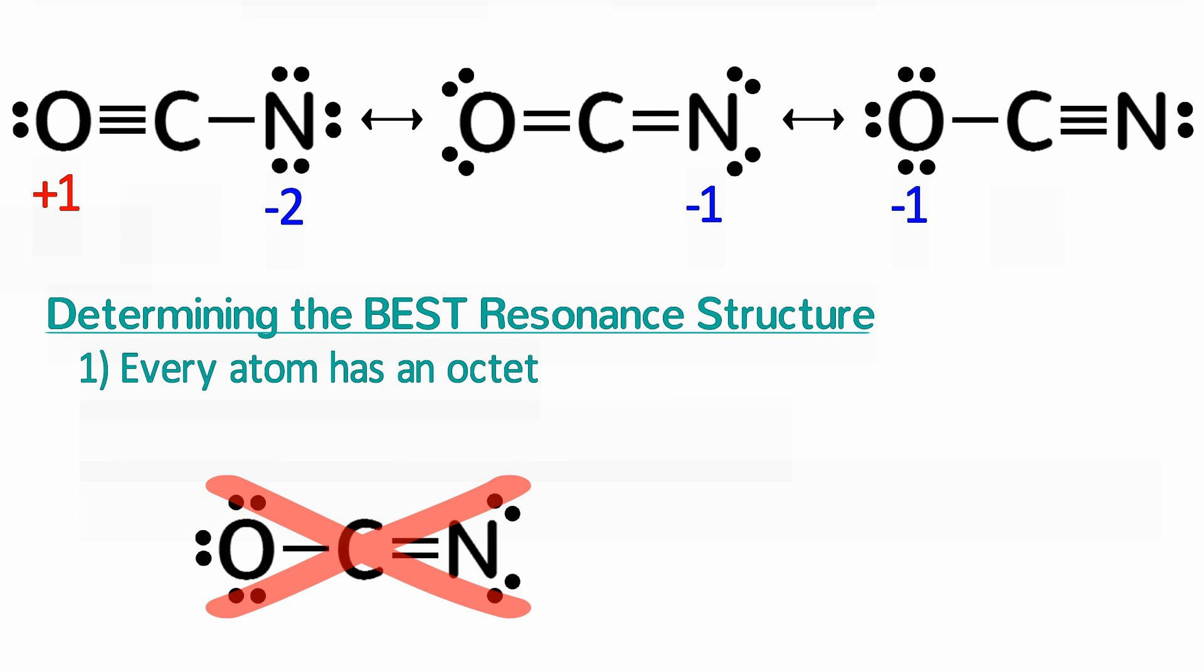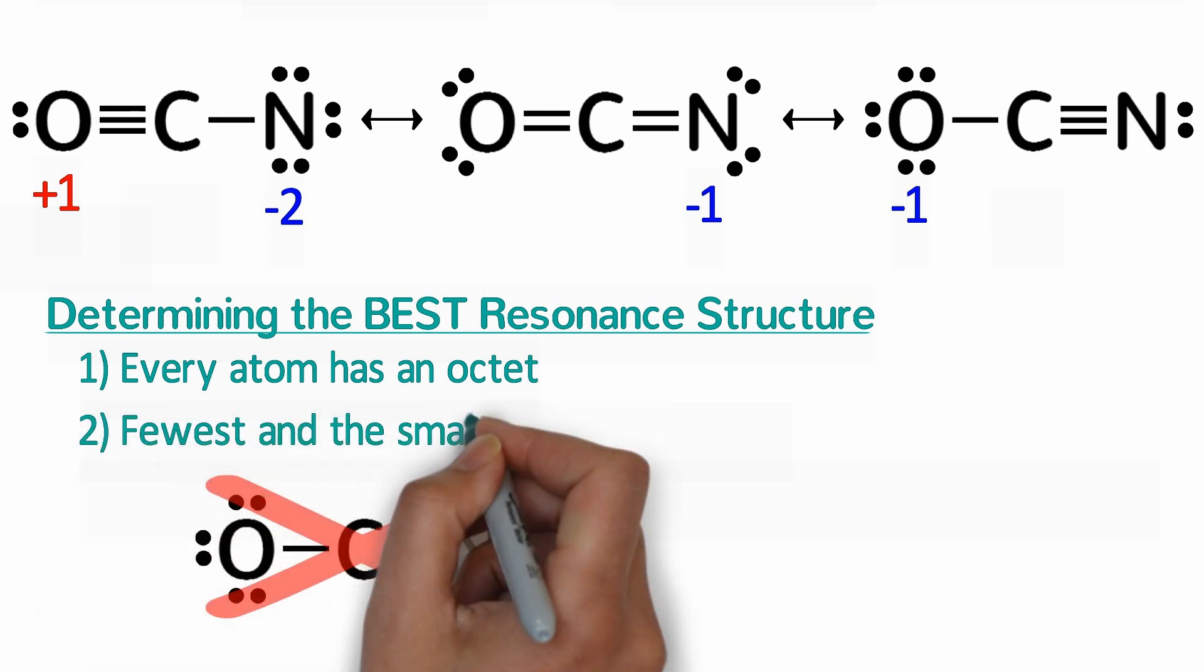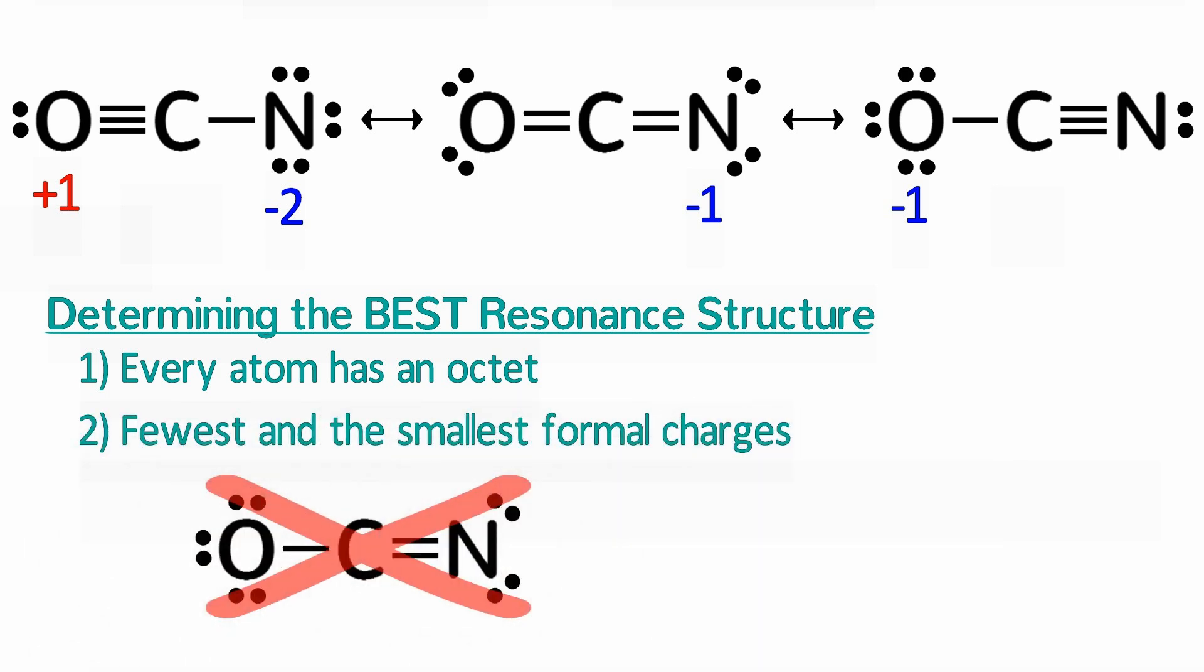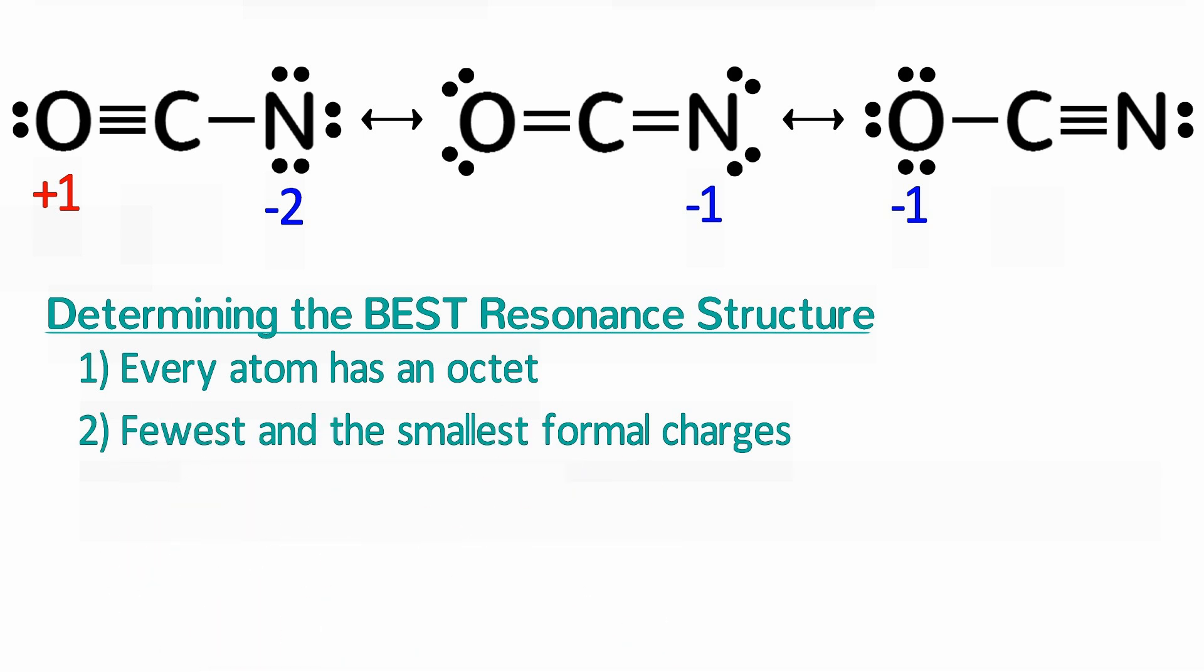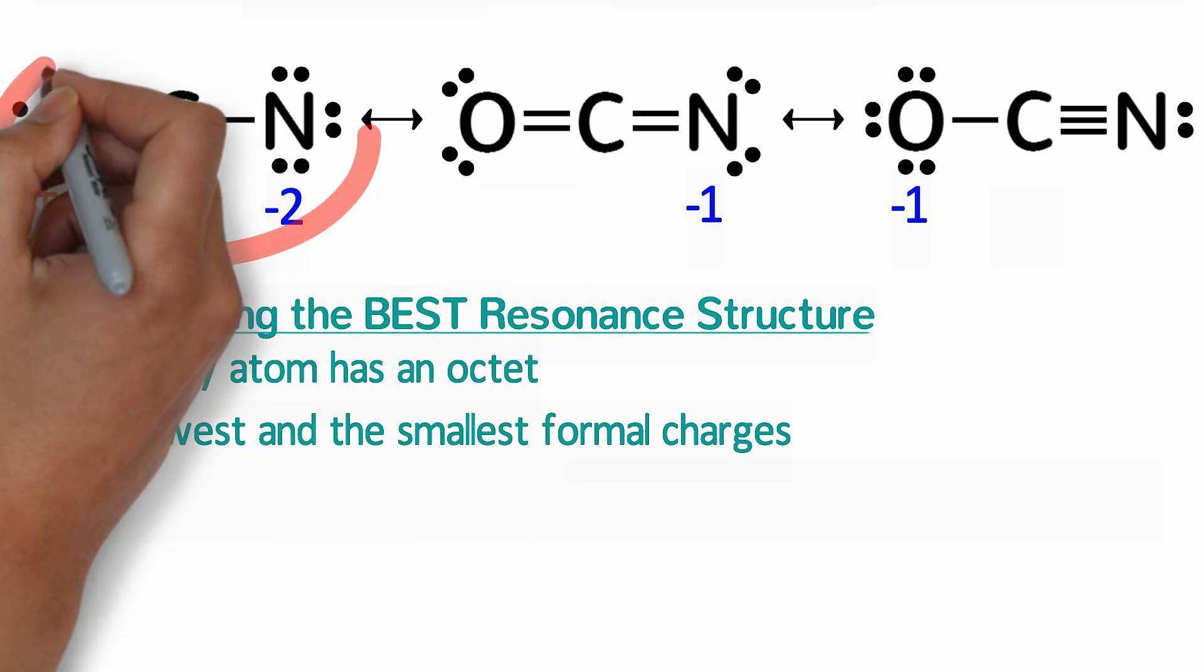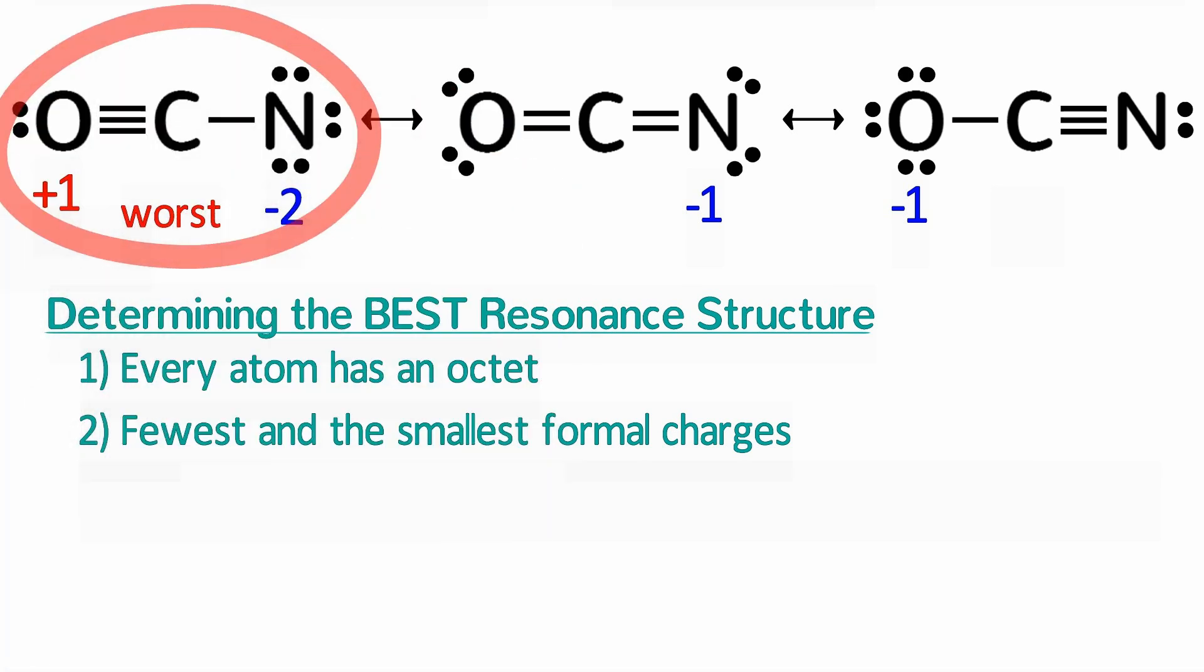Second in importance is that the best resonance structure should have the fewest and the smallest formal charges. Try to apply this rule to the three resonance structures with octets. Which structure here is the worst? Yes, this structure is the worst because it has positive one and negative two formal charges. The other two structures minimize the formal charges and are better than this one.